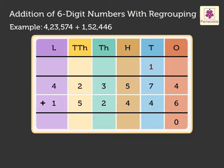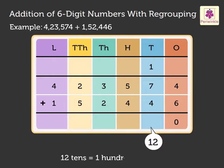Now, 1 plus 7 plus 4 gives 12. Regroup the 12 tens to 1 hundred and 2 tens. Carry the 1 hundred to the hundreds column and write 2 in the tens column.